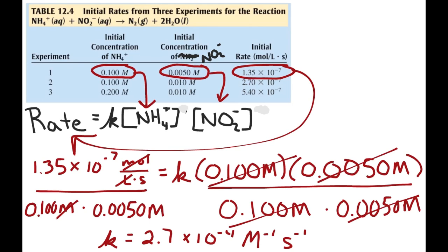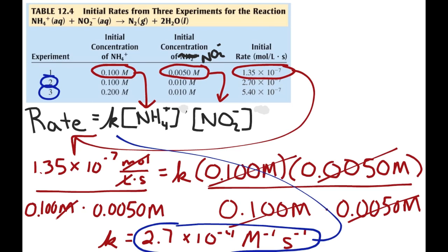Do the same thing with experiments 2 and 3 — we'll get the same value for K. The average value for K for these three experiments is 2.7 times 10 to the negative 4th per molar per second.